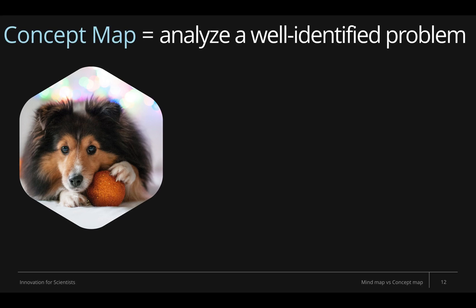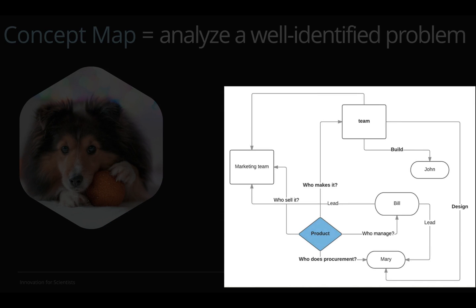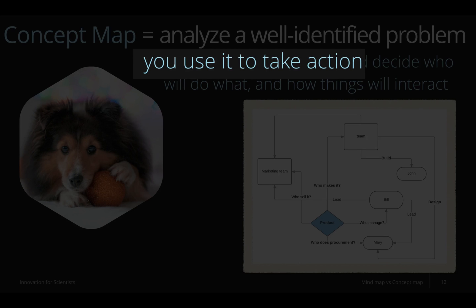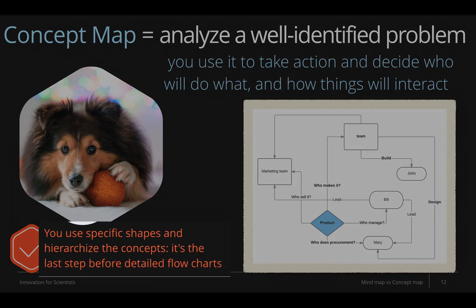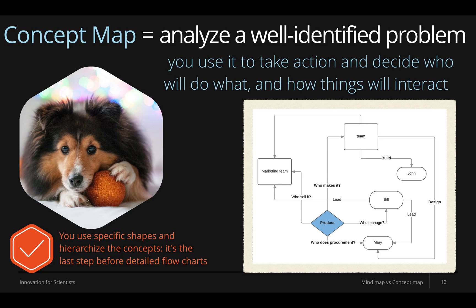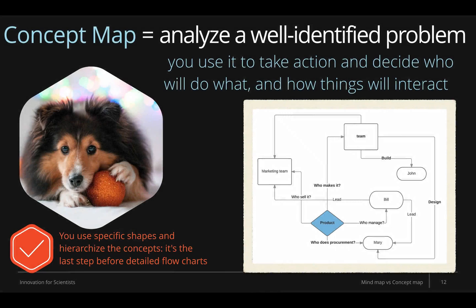The concept map is used when you have to analyze a well-identified problem. In the figure, you can see that the structure of a concept map is much more organized, with verb actions between the different items. You will use it when you must take action — when you must decide who will do what and how things will interact in a project. In a concept map, people usually use specific shapes to organize and rank concepts between actions, data, users, and choices. It is actually the last step before building a detailed flowchart.